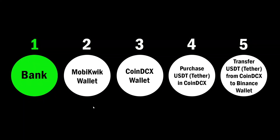To transfer your money from your bank to your Binance wallet, there are some steps. First, you have to keep money ready in your bank. After that, transfer that money from your bank to your Mobikwik wallet, then from Mobikwik wallet to your CoinDCX wallet. In CoinDCX, you purchase USDT, and then transfer that USDT to your Binance wallet.